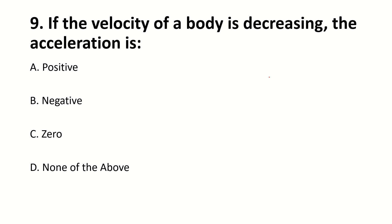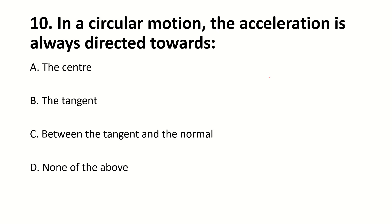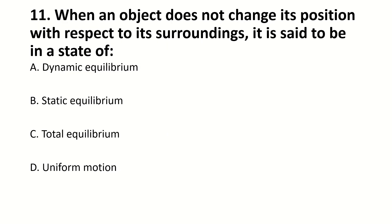The velocity of a body is decreasing, the acceleration is dash. Right answer is negative. In a circular motion the acceleration is always directed towards dash. Right answer is center. When an object does not change its position with respect to its surrounding it is said to be in a state of dash. Right answer is static equilibrium.